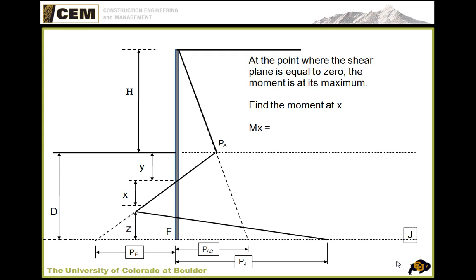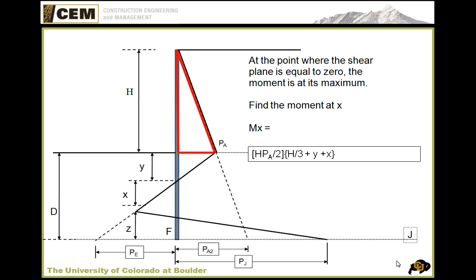Our goal here is to find M_X, the moment at X. We'll do that in general terms first. Based on our previous analysis, we need to find the area of each triangle and then find its distance away from point X. The first triangle has area equal to H times PA divided by 2 — that's the total force per linear foot of pile. The resultant force is at one-third of the height of the triangle from the base, and then we add the depth Y and the depth X to find the total moment arm, using point X as the reference.